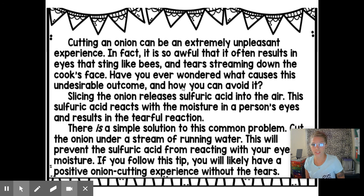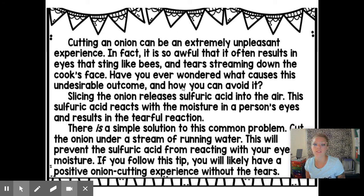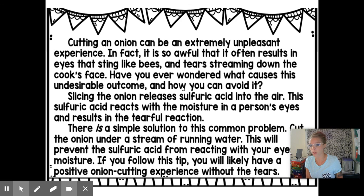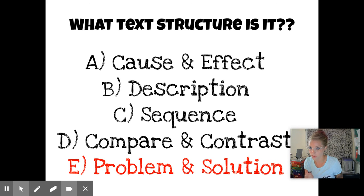Let's do one more. 'Cutting an onion can be an extremely unpleasant experience. In fact, it's so awful it often results in the eyes stinging like bees and tears streaming down the cook's face. Have you ever wondered what causes this undesirable outcome and how you can avoid it? Slicing the onion releases sulfuric acid into the air. The sulfuric acid reacts to the moisture in a person's eyes and results in the tearful reaction. There is a simple solution to this common problem: cut the onion under a stream of running water. This will prevent the sulfuric acid from reacting with your eye moisture. If you follow this tip, you are likely to have a positive onion-cutting experience without the tears.' I actually tried this past weekend and it totally worked. The problem is your eyes watering, and the solution is running it under water — so hopefully you identified this as problem and solution.